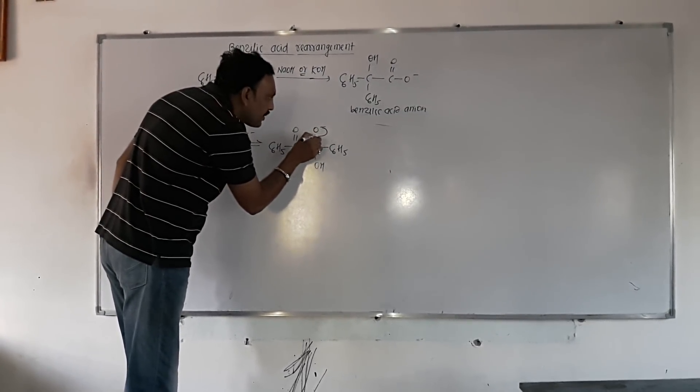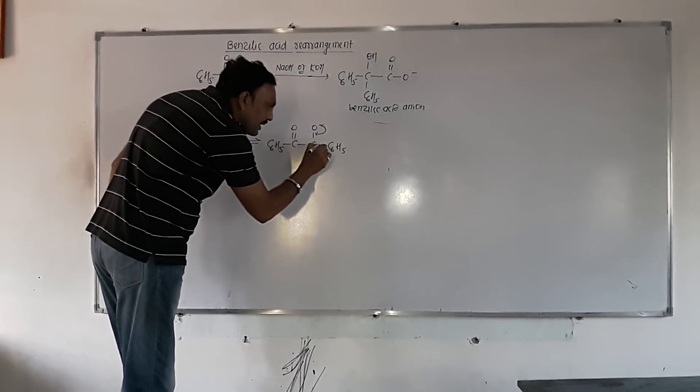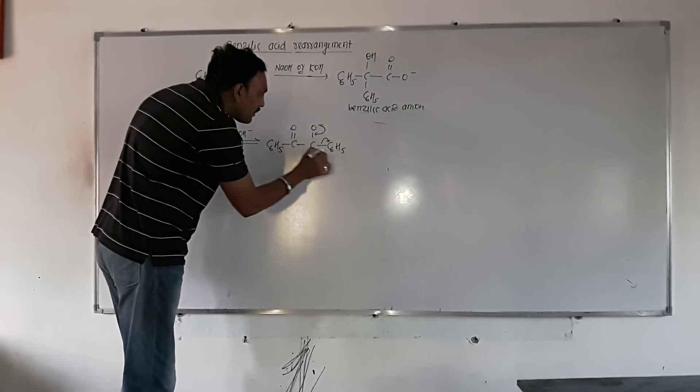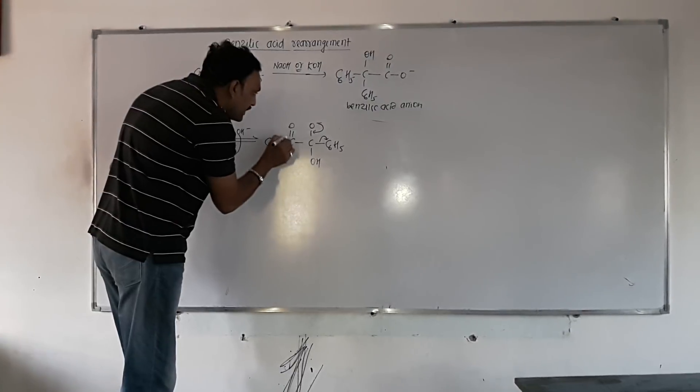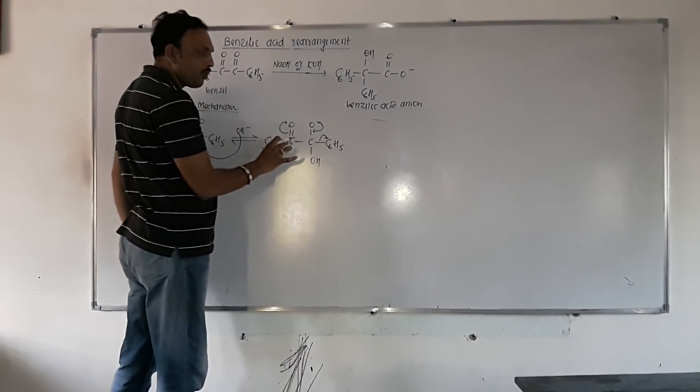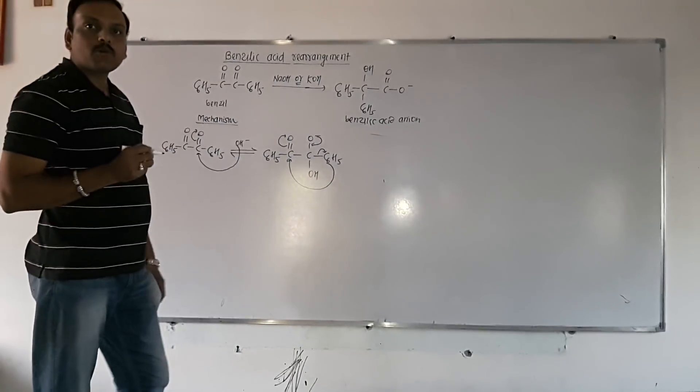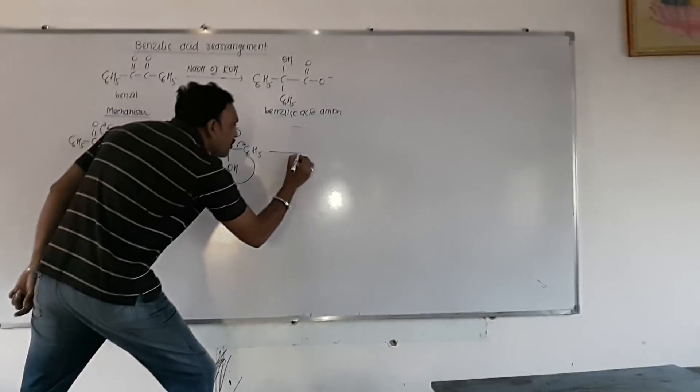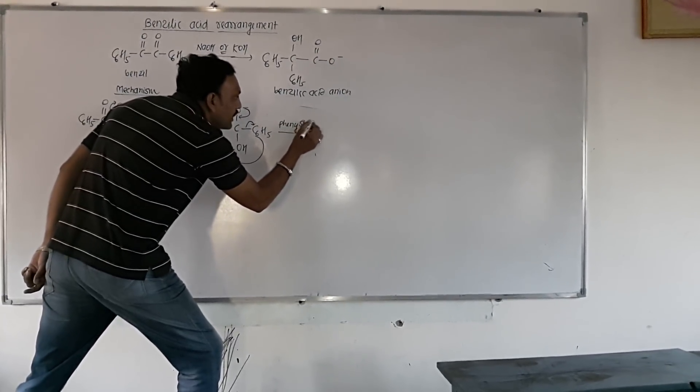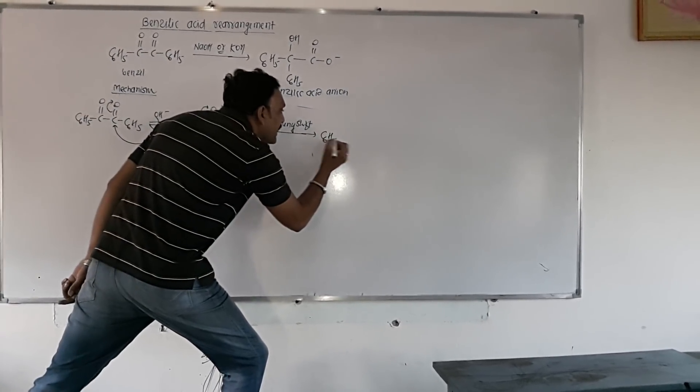Oxygen shares this pair with this carbon. And, this phenyl group, this is very crucial step of the reaction. Phenyl group, along with pair of electrons, tends to rearrange right here. Why? Because, right here, CO group, it is polar active. So, phenyl group tends to rearrange itself right here. This is called as phenyl shift. So, phenyl shift is a very crucial stage of this mechanism.